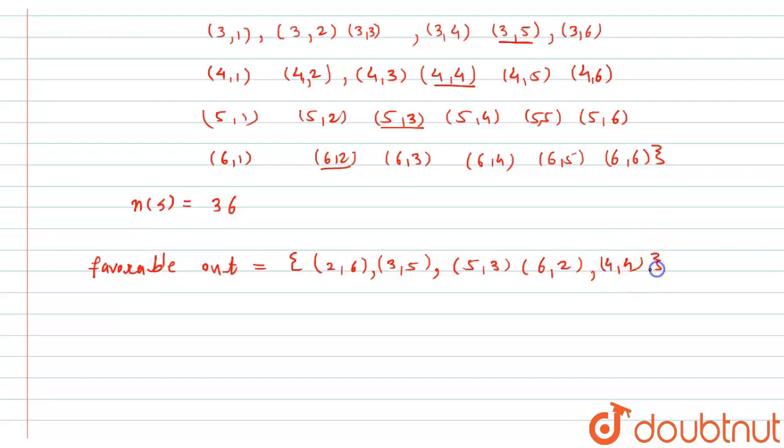So the total number of favorable outcomes, if I consider it as E, will be N(E) equals 5. Hence, the probability of getting the sum as 8 will be 5 divided by the total number of outcomes, that is 36.